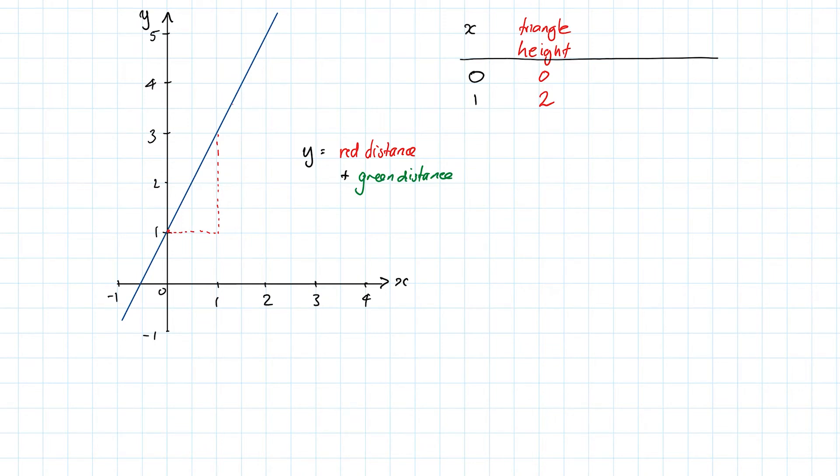If we move x out to 1, then our height will be 2. And then if x is 2, then the height is 4. And if x is 3, then the height would be 6, etc. So maybe you can see a formula for this height in terms of x. That's right, it's just doubling it. So the height will be 2x. And the number 2 is called the slope, or the gradient of that line.